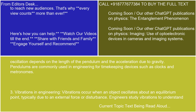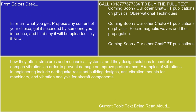3. Vibrations in engineering. Vibrations occur when an object oscillates about an equilibrium point, typically due to an external force or disturbance. Engineers study vibrations to understand how they affect structures and mechanical systems, and they design solutions to control or dampen vibrations in order to prevent damage or improve performance. Examples include earthquake-resistant building designs, anti-vibration mounts for machinery, and vibration analysis for aircraft components.